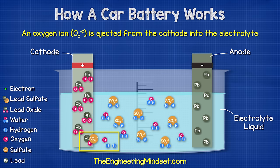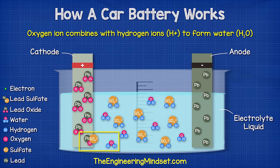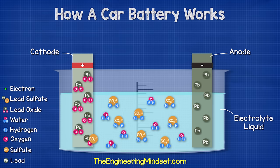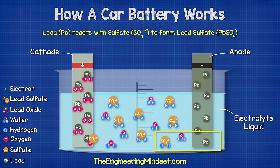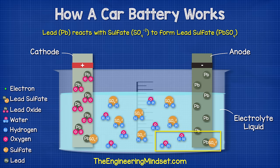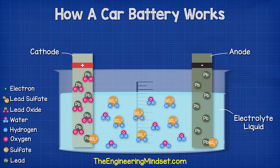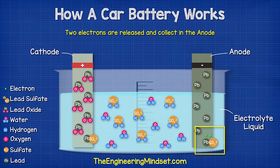Once in the electrolyte, these oxygen ions combine with the hydrogen ions to form water. At the same time, the lead atoms on the anode are going to react with the sulfate ions in the electrolyte. This reaction will create a layer of lead sulfate around the electrode.